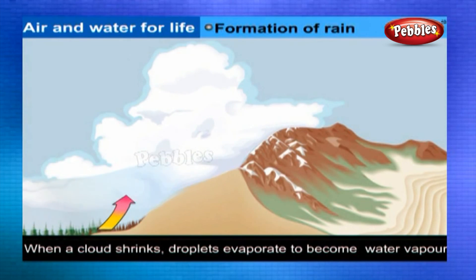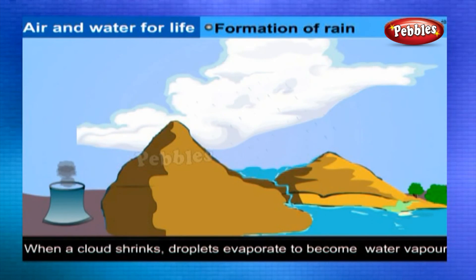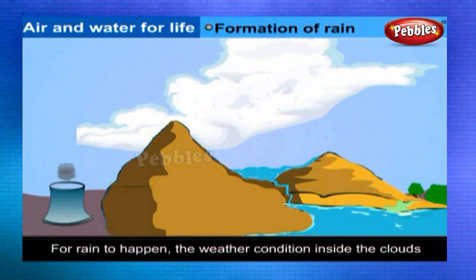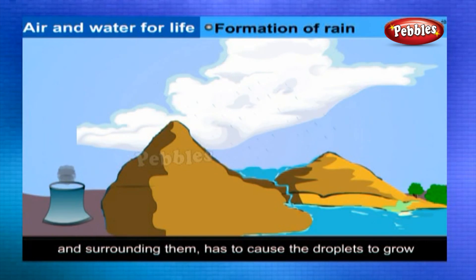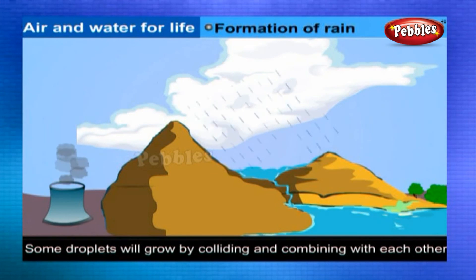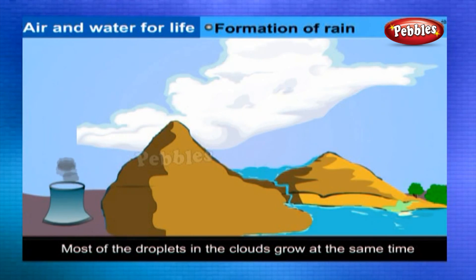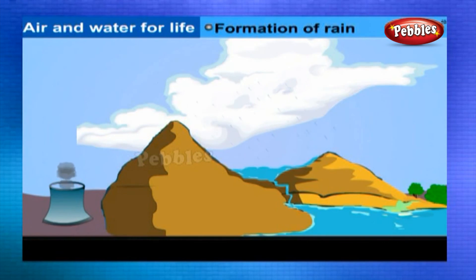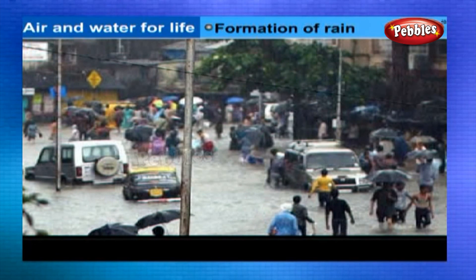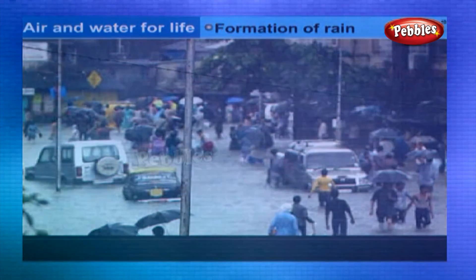When a cloud shrinks, many droplets evaporate completely to become invisible water vapor. For rain to happen, conditions inside and around the clouds must cause droplets to grow — some by colliding and combining with each other, some by acquiring more water vapor from the air, and some by doing both. Most droplets grow at the same time but not at the same rate; some grow faster. As soon as they get big enough, they start to fall out of the cloud and eventually reach the ground.